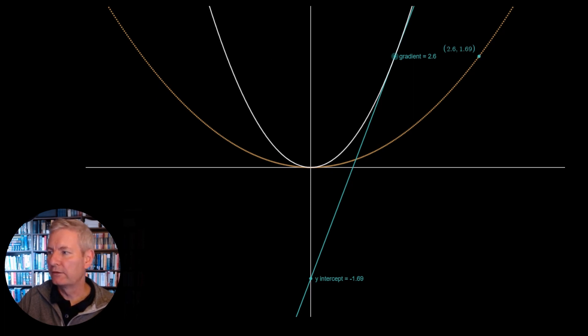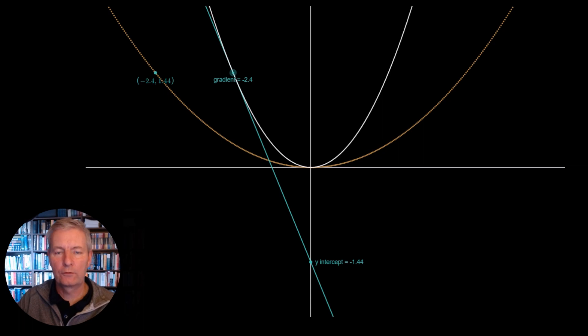So we do this for every single point in the white curve. And we map out this new function, which is in brown, which is the Legendre Transform of the original function.